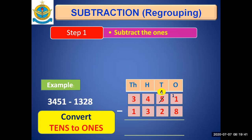Now, this 10 ones plus 1 one that was already there, it becomes 11 now. And 11 minus 8 is now possible. So, 11 minus 8 is 3. Write this difference in the ones column.